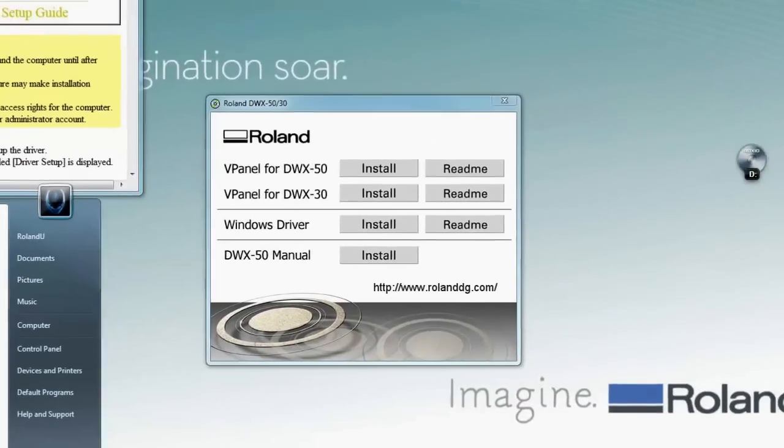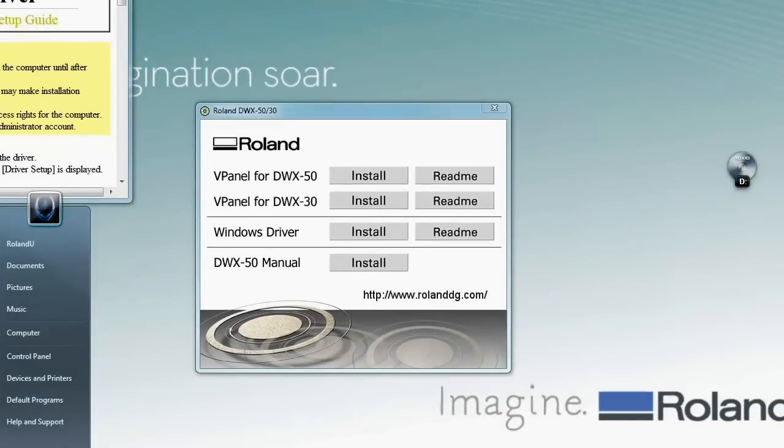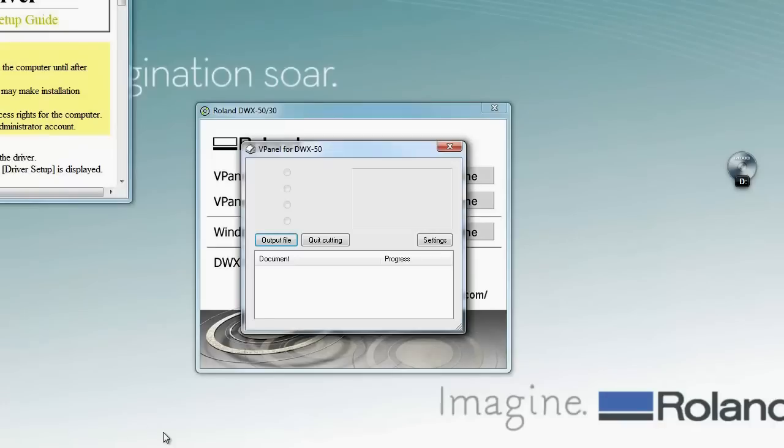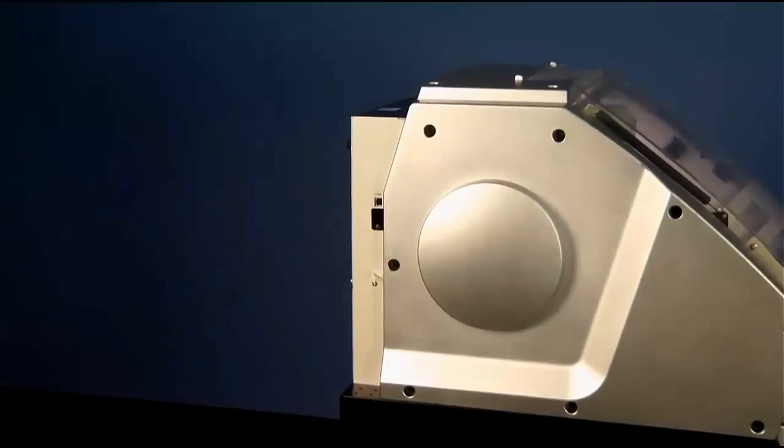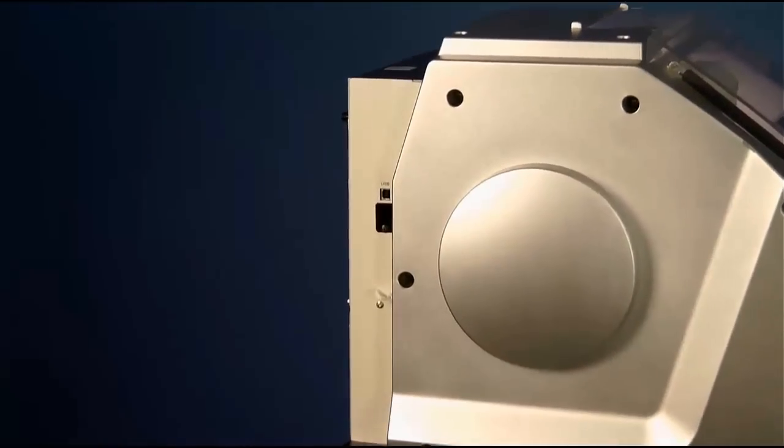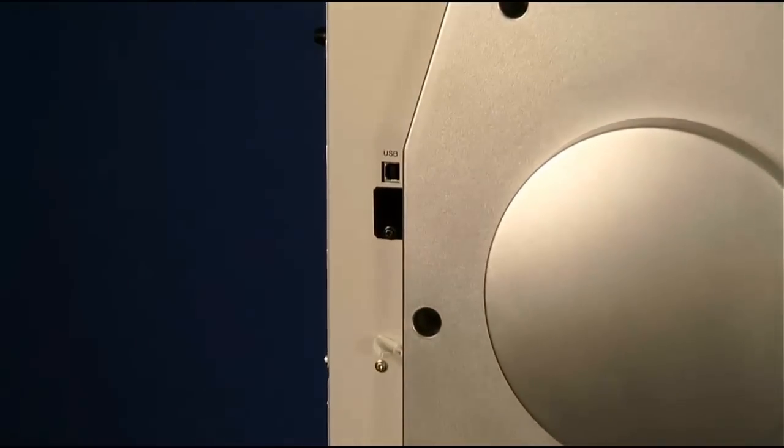Once everything is complete, you should locate your v-panel or virtual panel in the program section in your computer. When you open it up, there will be no machine until you do plug in the USB port for the DWX50.